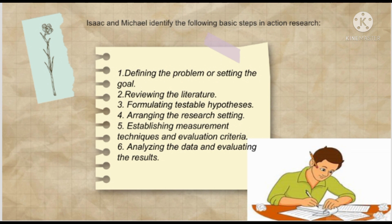Issaac and Michael identified the following basic steps in action research: first, defining the problem or setting the goal; second, reviewing the literature; third, formulating testable hypothesis; fourth, arranging the research setting; fifth, establishing measurement techniques and evaluation criteria; and lastly, analyzing the data and evaluating the result.